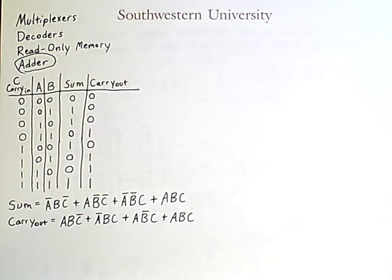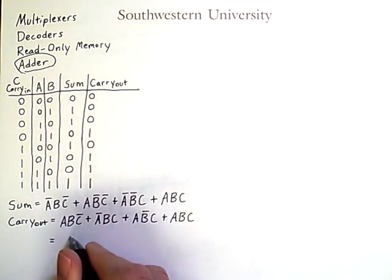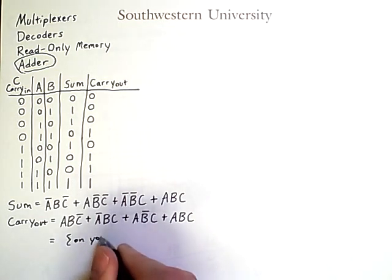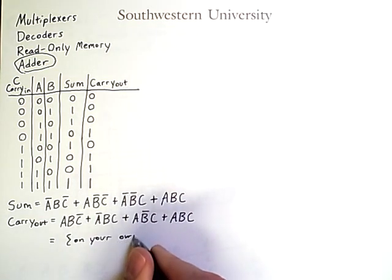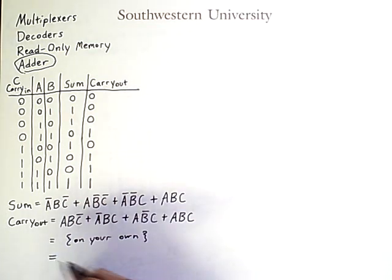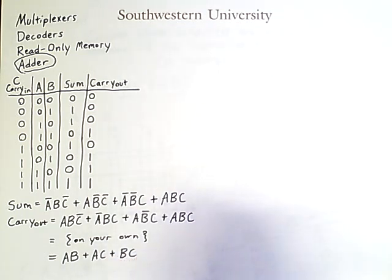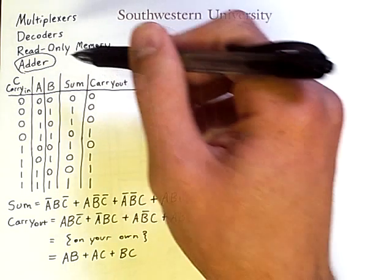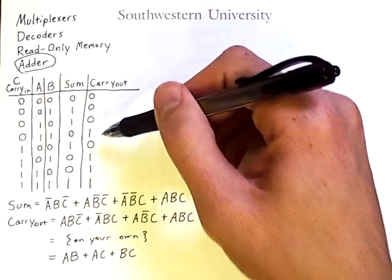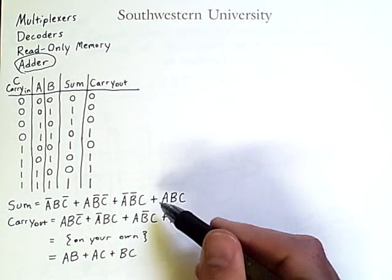Now, it turns out, however, that this expression can be simplified via a process that I'll leave you to do on your own. And you can show that it is equivalent to a and b, or a and c, or b and c.